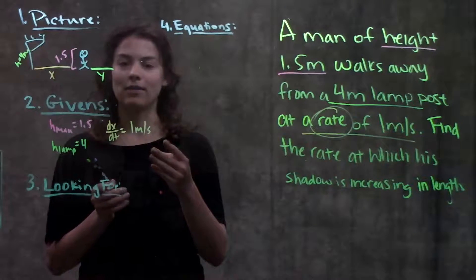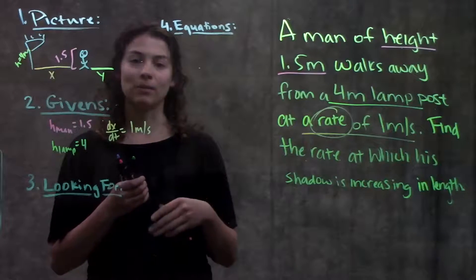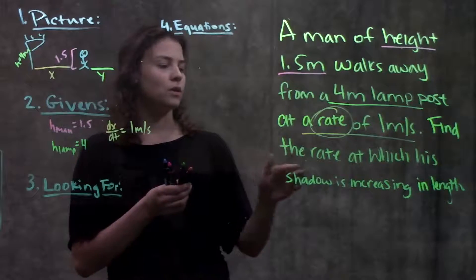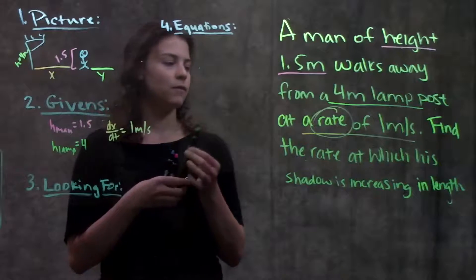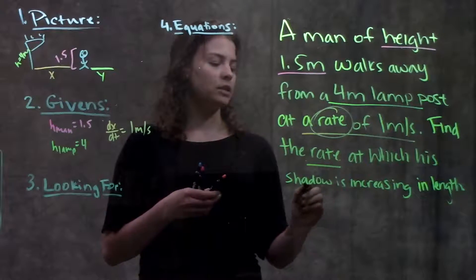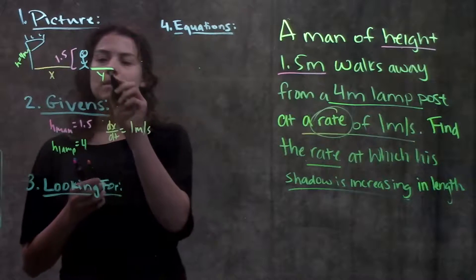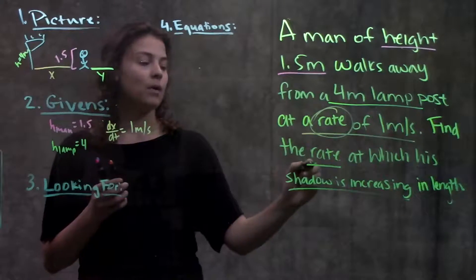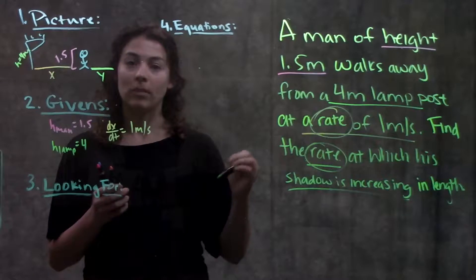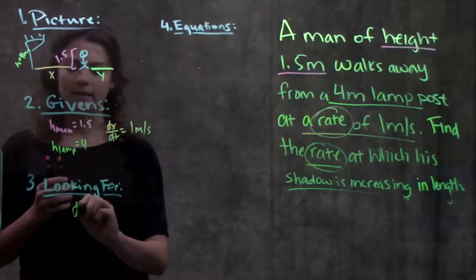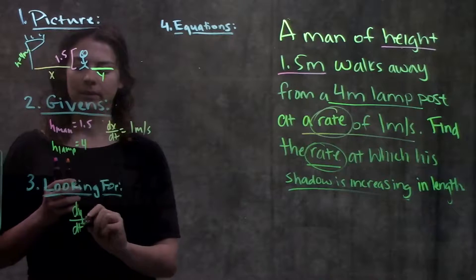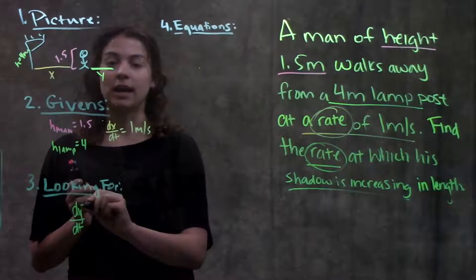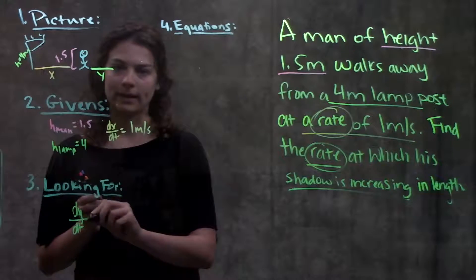Okay written down my givens. Step three write down what I'm looking for. So go to the last sentence and it's asking for find the rate at which his shadow is increasing. Okay remember I represented his shadow by this value y. I'm going to represent the rate of his shadow, remember rate means derivative, as dy over dt. At what rate is his shadow y increasing with respect to time?